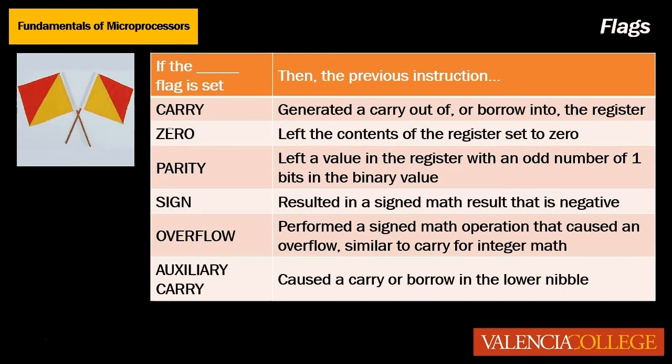The sign flag is set if the contents of the register have the sign bits set to negative. The overflow flag is set if the signed math instruction caused an overflow, which is different than a carry. The auxiliary carry flag is there if there is a carry or a borrow in the lower nibble. As we start using various instructions in our programs, we will start to see how the instructions affect the values for the various flags.